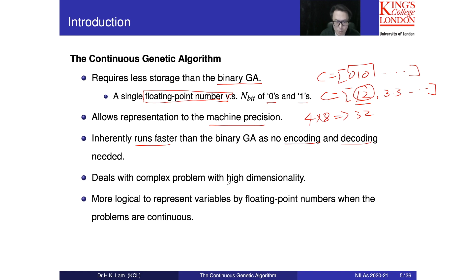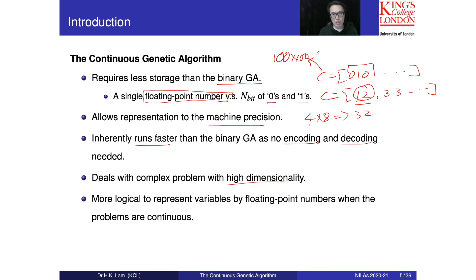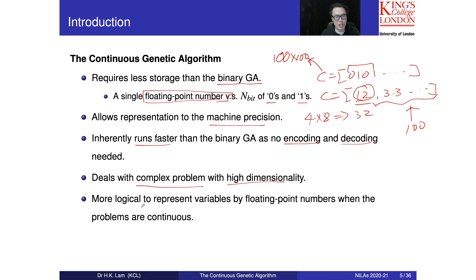When dealing with high-dimensional cases with many decision variables, if we use 100 bits per decision variable and have 100 decision variables, the chromosome would have 100 times 100 bits. But with floating point numbers, we only have 100 values — one per variable. That's why the continuous genetic algorithm has greater potential to handle complex problems compared with BGA, and it is more logical to represent the chromosome this way since in many real-world examples the decision variables are real values.